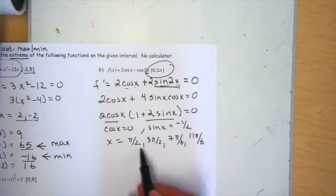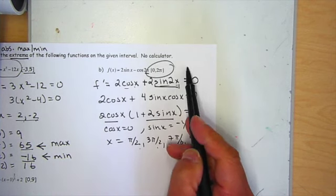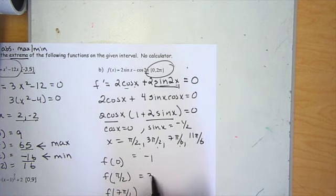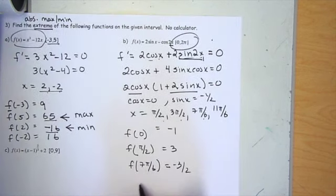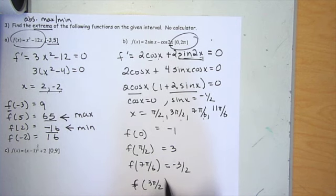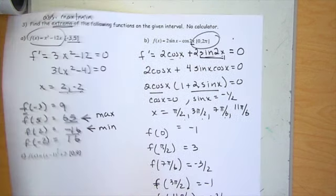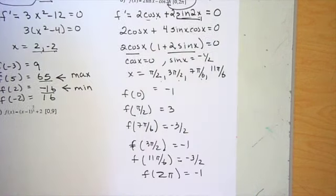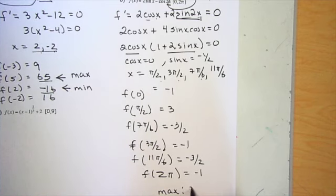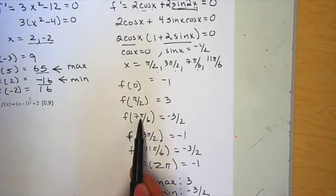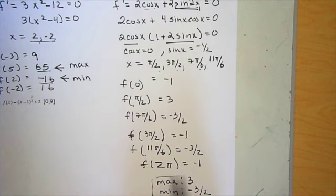And again, these are all my critical numbers. There's 2 endpoints. So I'm going to plug these all back into the original function to find my highest point and my lowest point. And that will give me my max and my min. And you can plug these into the calculator real quick on your table feature to find these values real quick. This is negative 3 halves. This is f of 2 pi. So if I look, now you can have more than one place where the max or the min occurs, but your max, the highest point on the graph is 3, and the lowest point on your graph is negative 3 halves. It's fine that it happens at two different x values, but your max and your min should be your y values.